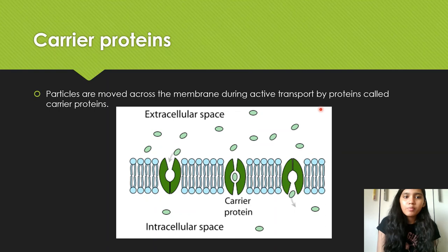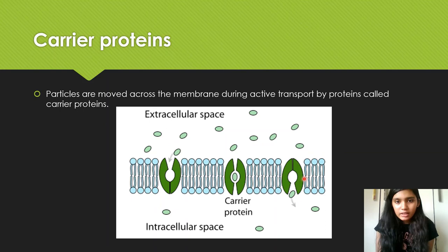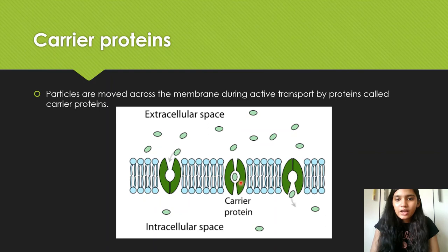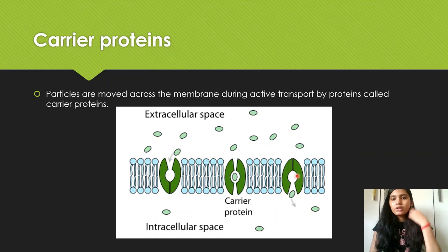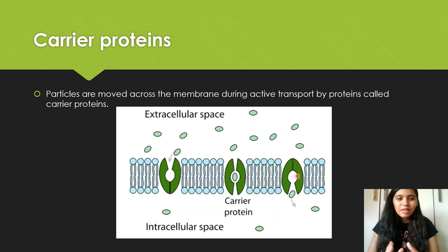Particles are moved across the membrane during active transport by proteins called carrier proteins, which are embedded in the cell membrane. An ion attaches itself to the carrier protein, and the carrier protein uses energy from respiration to open up and release the ion into the cell. Even just referring to carrier proteins in your answer gets you a mark. You should be able to explain this process — the diagram is self-explanatory.